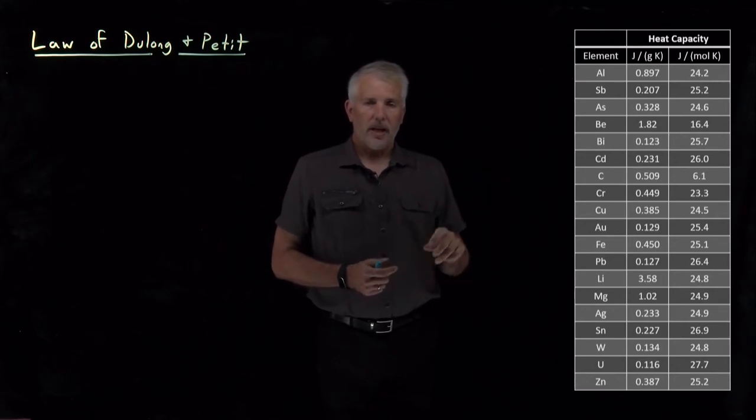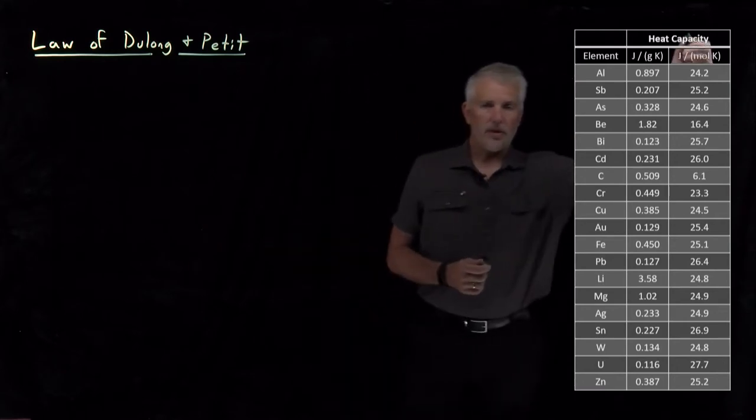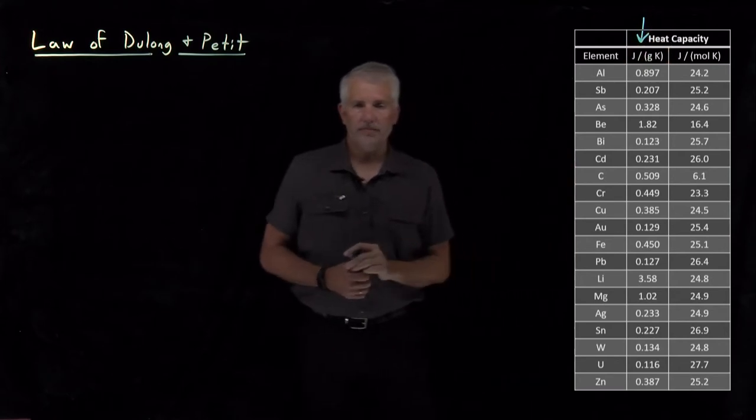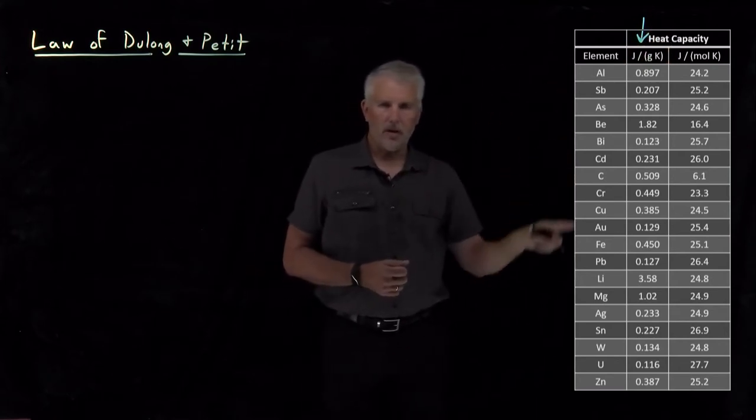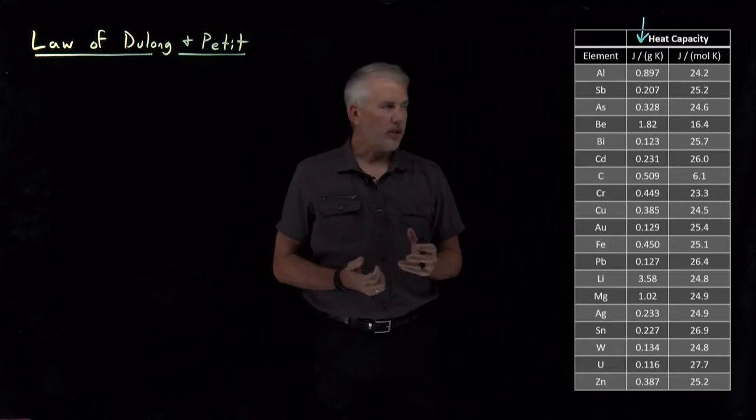You can see if we look at the heat capacities in units of joules per gram Kelvin, those numbers vary all over the map. That might be about what you'd expect to find.